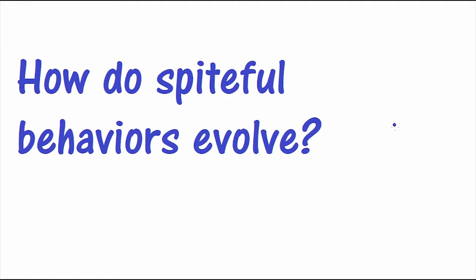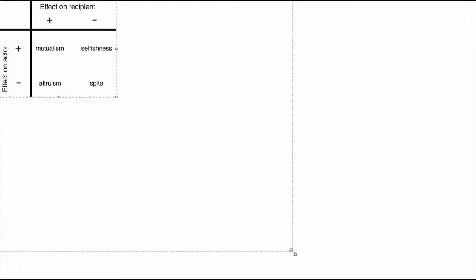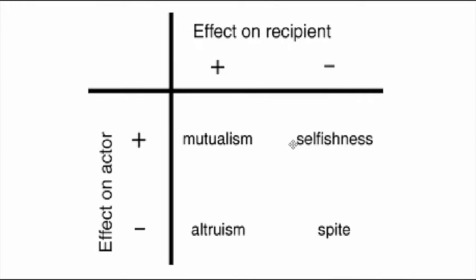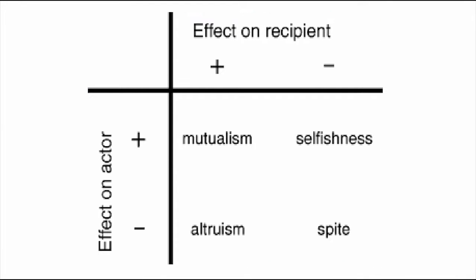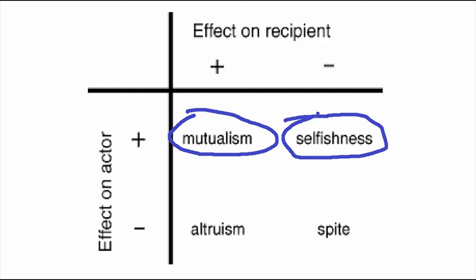How do spiteful behaviors evolve? In nature, the actions that organisms take can affect other organisms around them. These behaviors are classified based on the direct fitness consequences they create for the actor and the recipient — in other words, is the behavior good or bad for the organism doing it, and good or bad for the organism receiving the effect? Assuming the behavior is positive for the actor, it's called mutualism when it also benefits the recipient, and selfishness when it hurts the recipient.